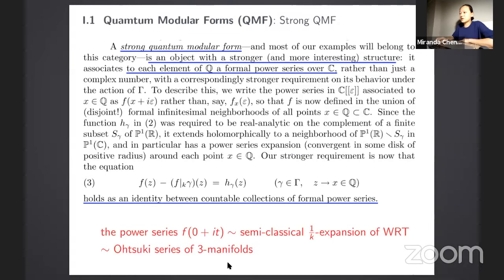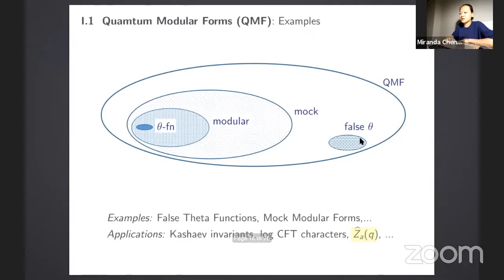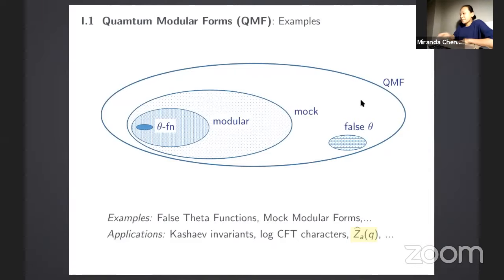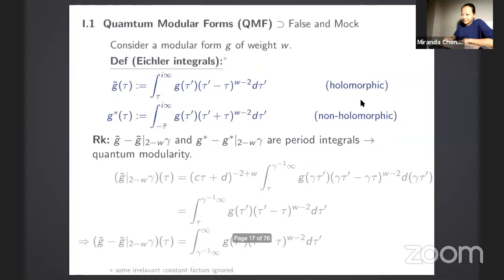Are there interesting examples of quantum modular forms — otherwise it would be a silly definition? Yes: mock modular forms and the so-called false theta functions satisfy the definition. I'll explain what false theta functions and mock modular forms are, give examples, and explain why they're examples of quantum modular forms.